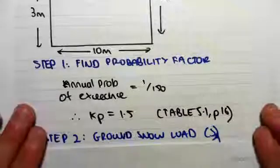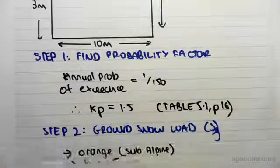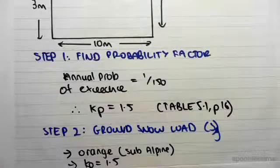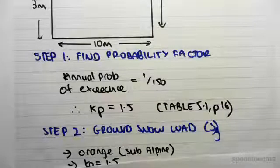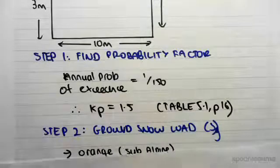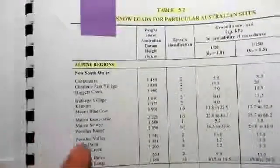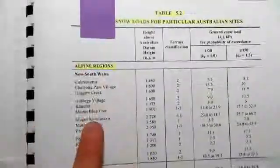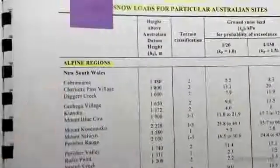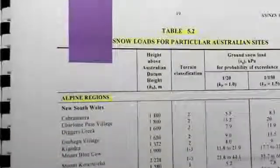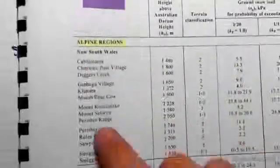We can then straight away find the ground snow load, s subscript g. We know that our building is in Orange. So in the previous video, our example is in Perisher, if I'm not mistaken, and Perisher Valley is in an alpine region. So we use this table here. But now, if you look through for Orange in New South Wales, it won't appear.